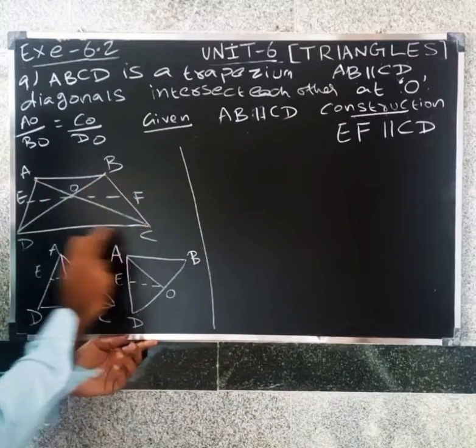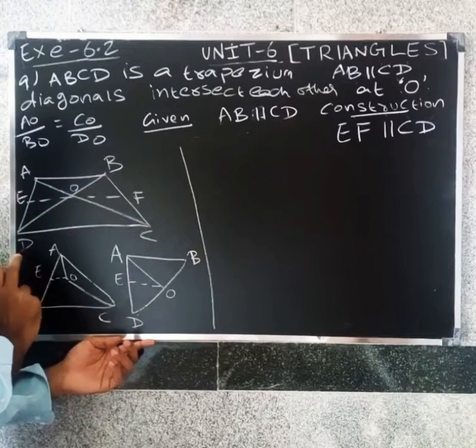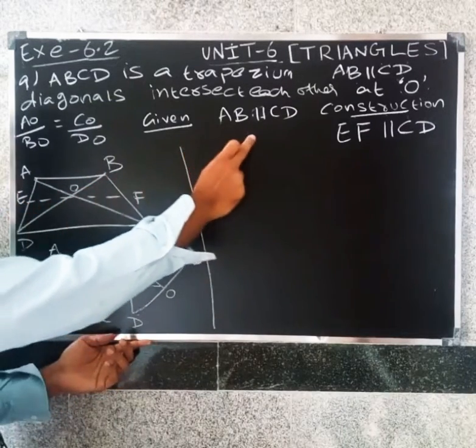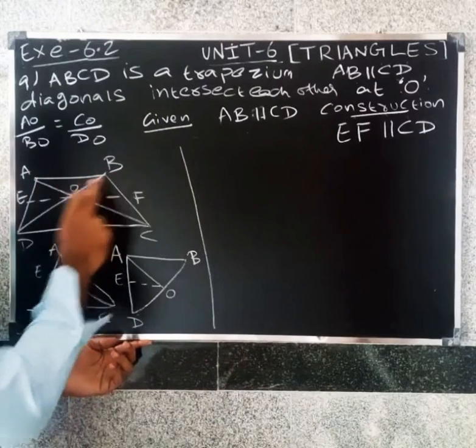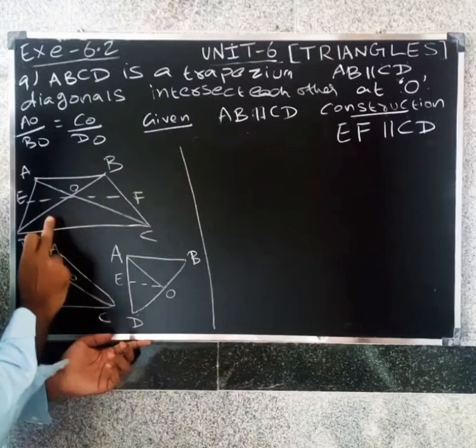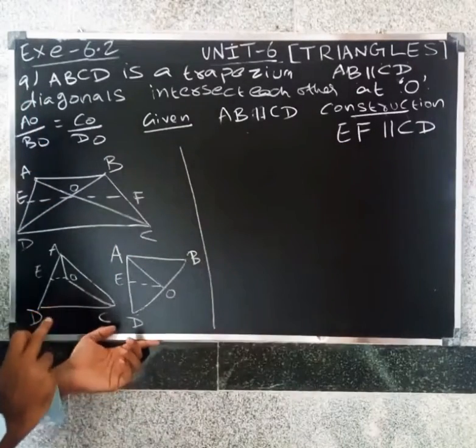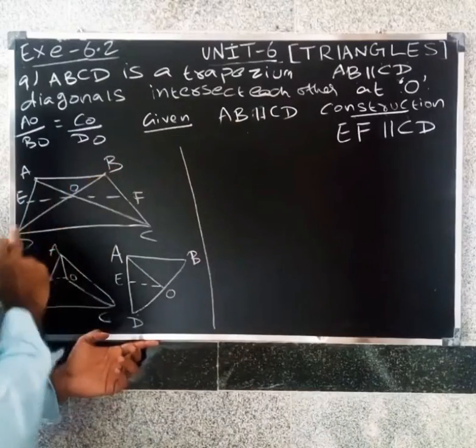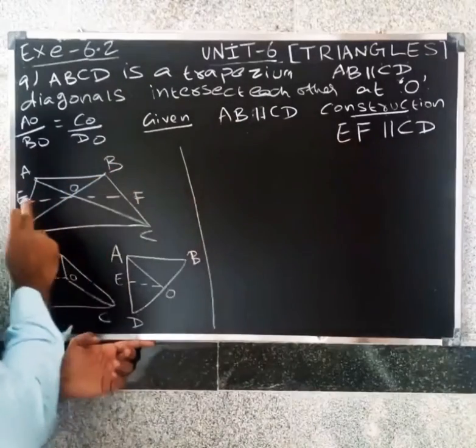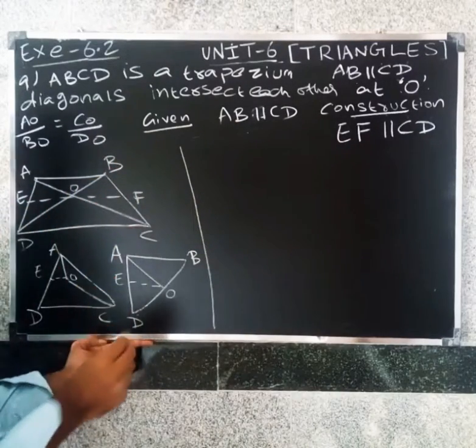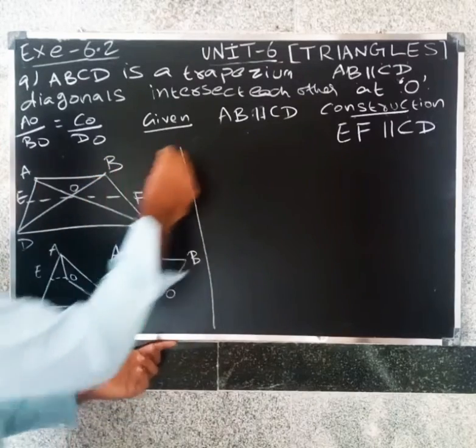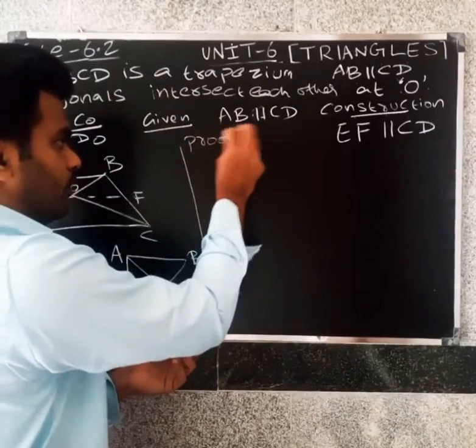This is trapezium ABCD. AB parallel to CD. Now EF parallel to CD. Given AB parallel to CD, construction EF parallel to CD. So we have to prove this. Prove.